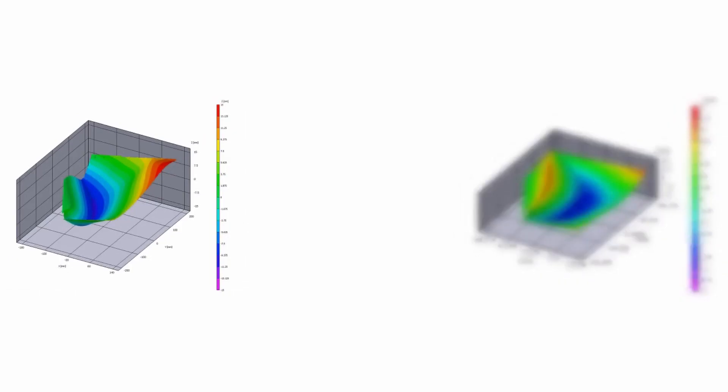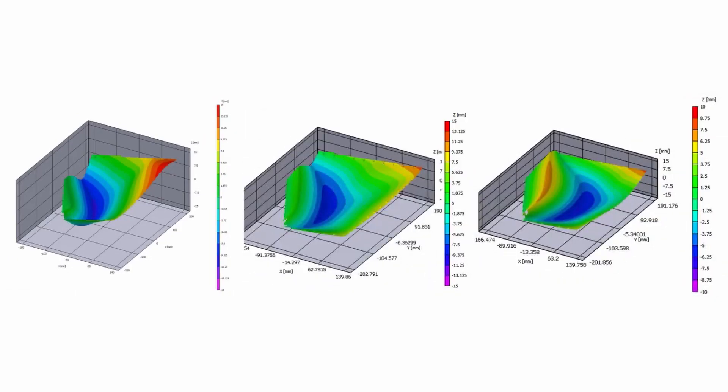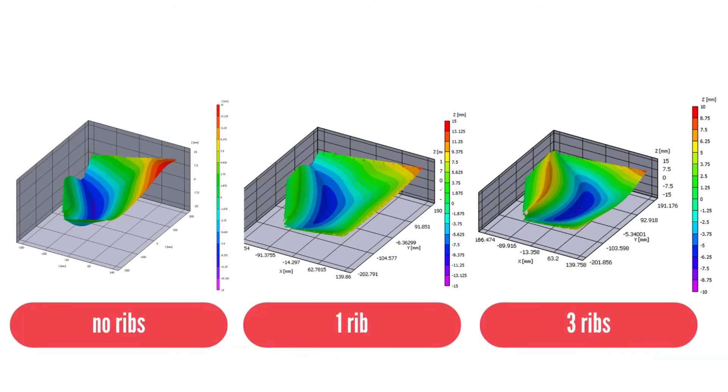Now, if we put the DIC results side by side, we get a lot more information than from just the first videos. Here we see 3D models of the root section of each wing box. No ribs on the left, one rib in the middle, and three ribs on the right.